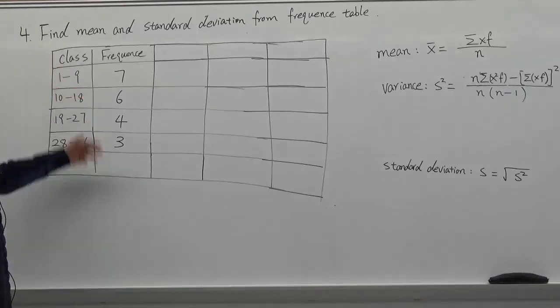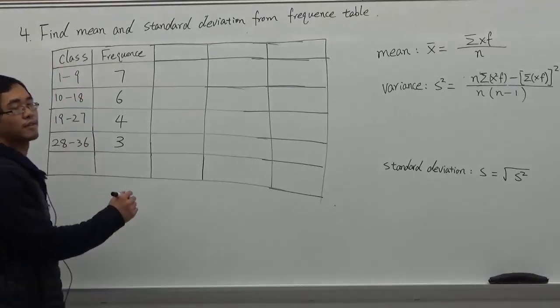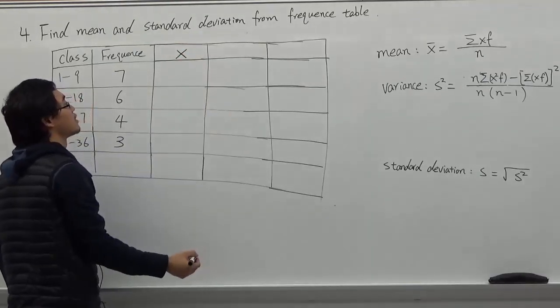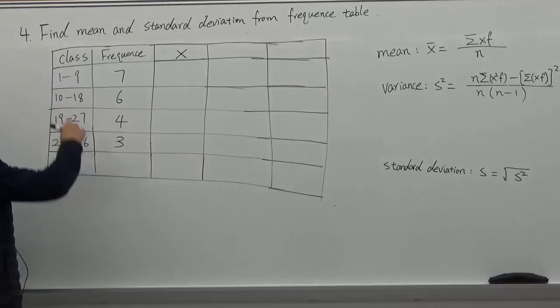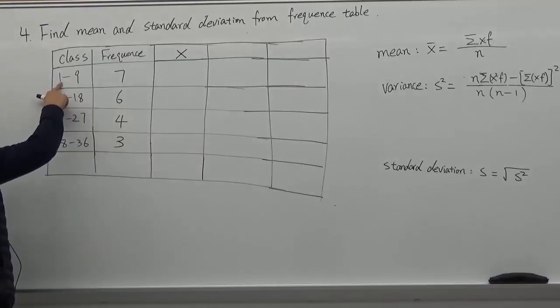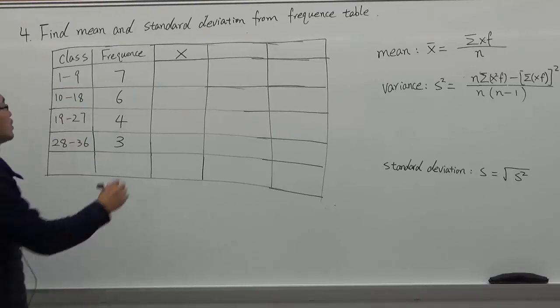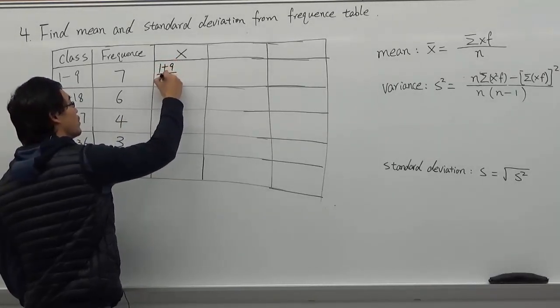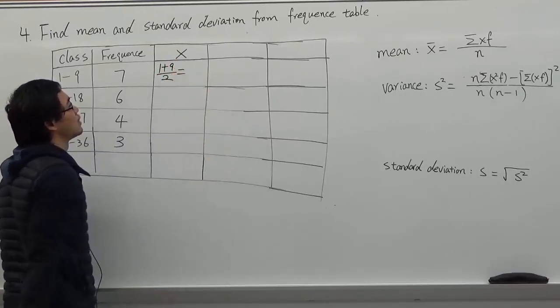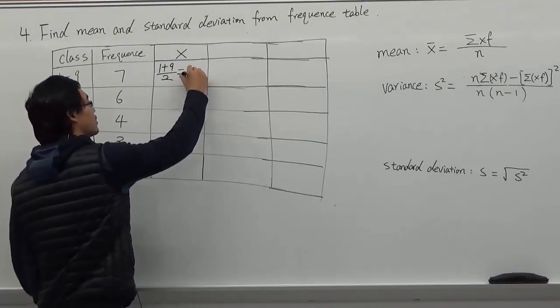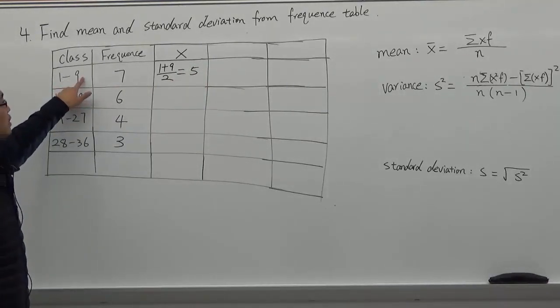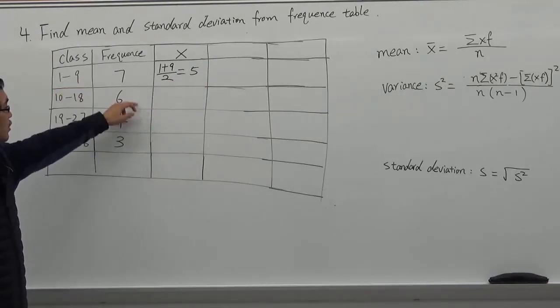This is a frequency table. First, we need to find the midpoint. We let the midpoint x. Midpoint is between lower bound and upper bound from class. So it's 1 plus 9 over 2 equal to 5. 5 is the first midpoint on the first class. The same idea for each class.